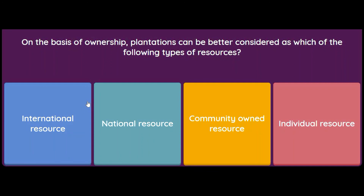This brings us to the last question of Part 2. If you liked this MCQ, please like, subscribe and share. On the basis of ownership, plantations can be better considered as which type of resource: international, national, community owned, or individual resource? The answer is individual resource, because they are individually owned. Thank you for watching — wishing you all success and good luck for your exams. Keep watching and keep sharing.